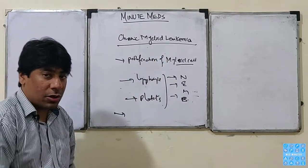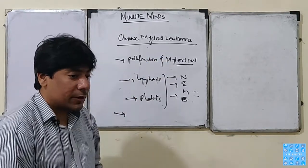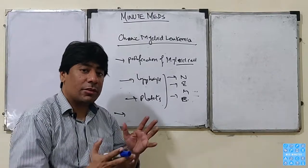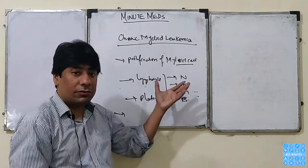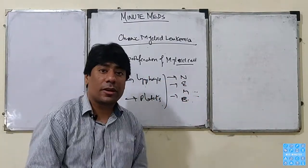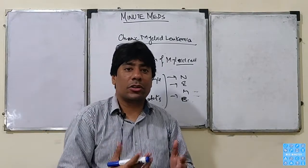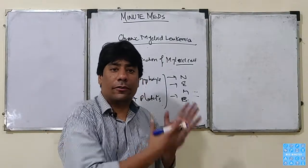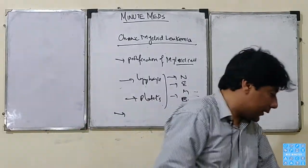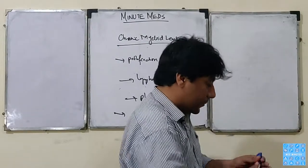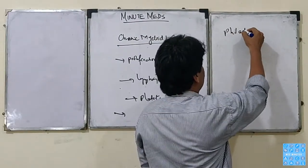Regarding chronic myeloid leukemia, we are going to study a genetic mutation, because this is one of the proliferative disorders where we luckily know the cause of this condition, which is called the Philadelphia chromosome.